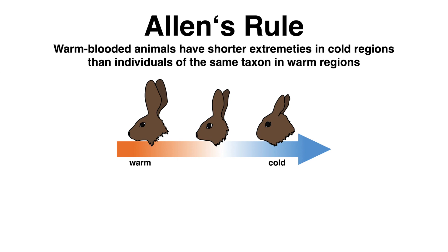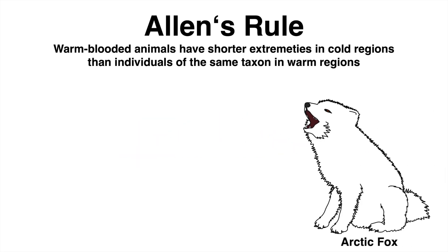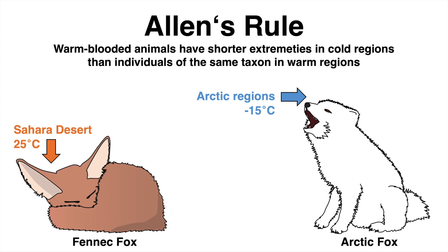But what is Allen's rule? It was observed that birds and mammals in cold environments have shorter body appendages — in other words, shorter ears, legs, or tails — than closely related species in warm environments. An example with two different species of foxes demonstrates this best. The arctic fox, found in cold environments with average temperatures of around minus 15 degrees Celsius, possesses short limbs. Another fox species, the fennec fox, lives in the Sahara desert of Africa, a warm environment, and has large ears and longer limbs.